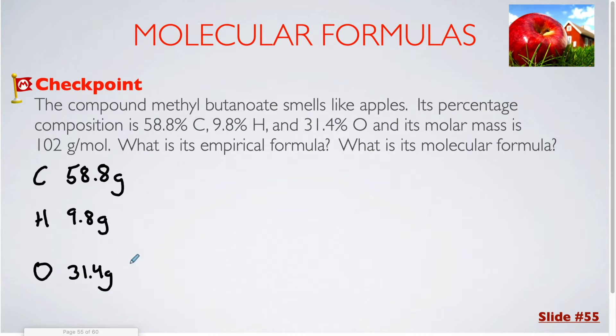For each of these three elements I am going to do a one step gram to mole conversion. So grams on the bottom, moles on top, and the molar mass of carbon is 12.01. The molar mass of hydrogen is 1.01, and the molar mass of oxygen is 16.00.